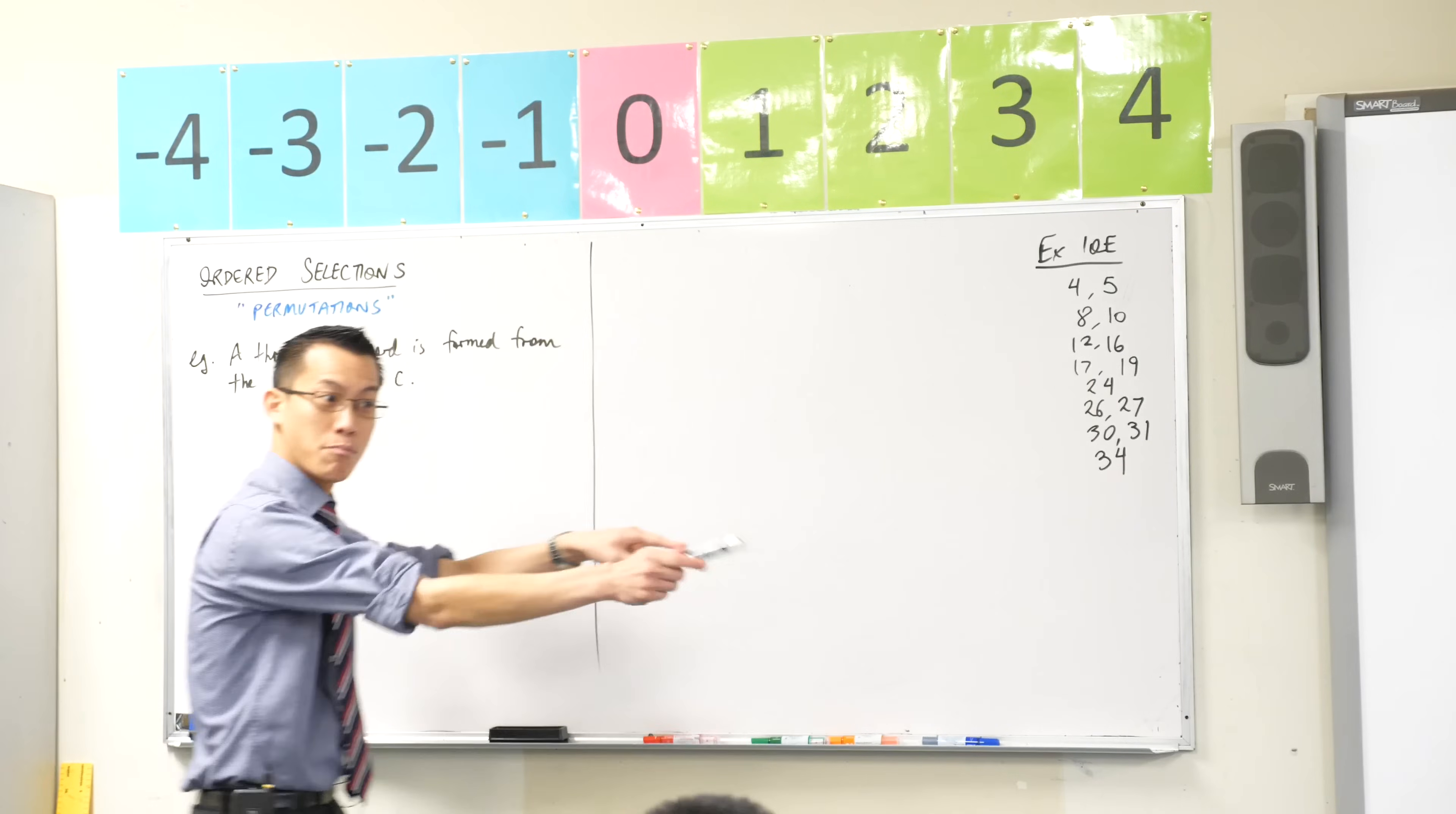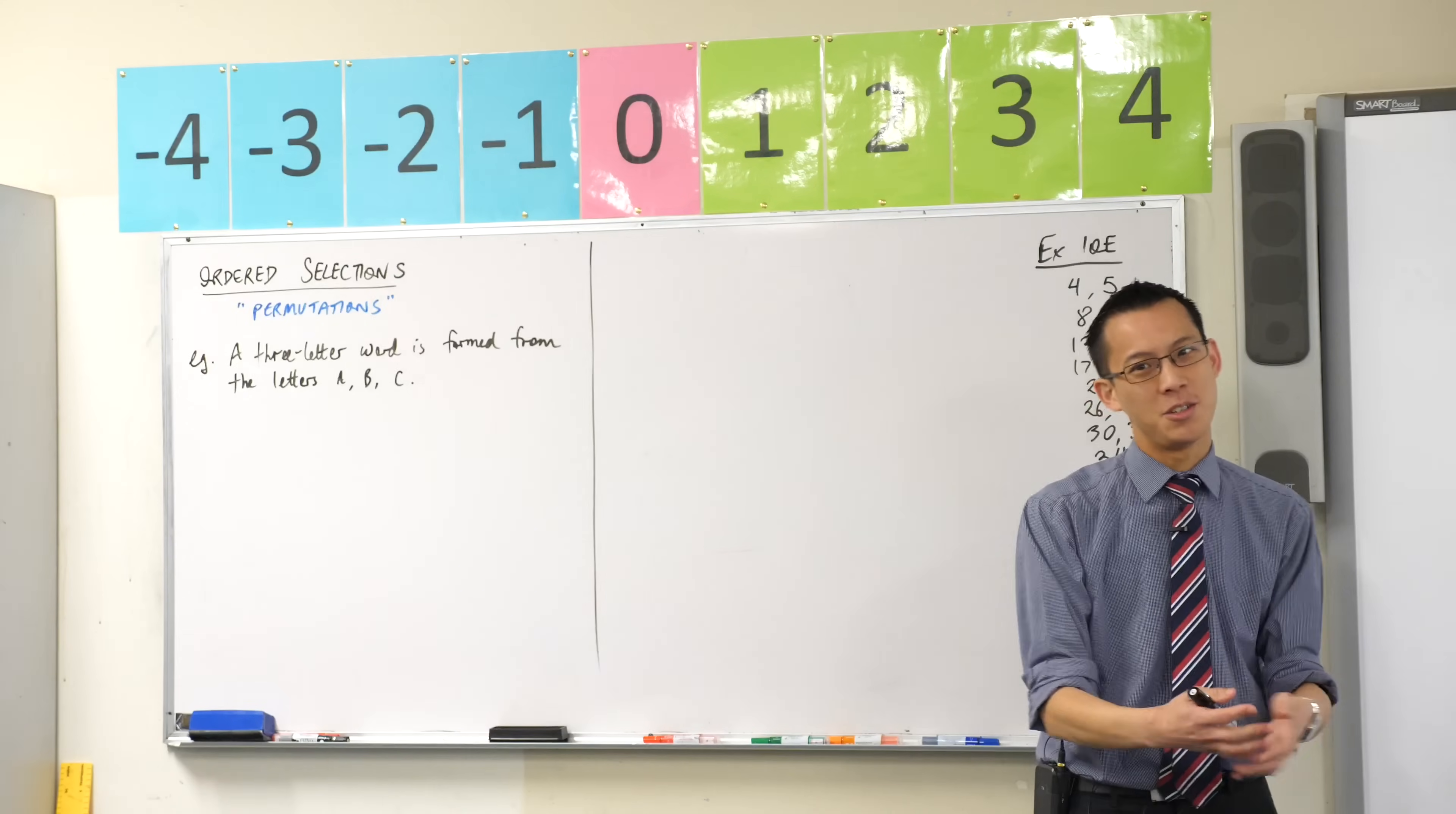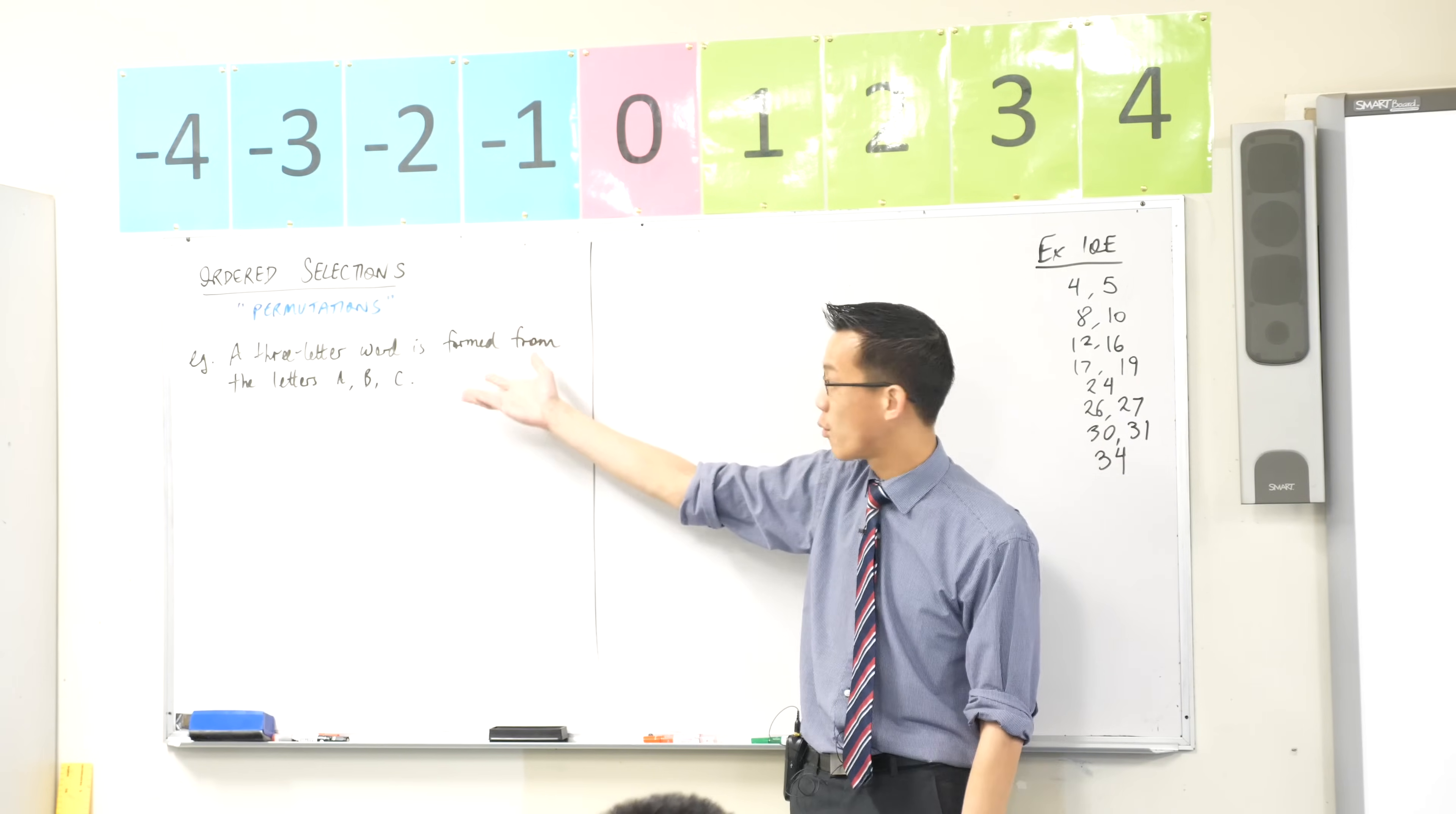But clearly to answer any of those probability questions you first got to work out well what is the sample space, right? What are the total number of things that you've got to choose from and then you make that your denominator then off you go, okay? Now it turns out that asking that question, how big is the sample space? How many different ways are there to do something? It is kind of its own category of question and that's what ordered selections are about.